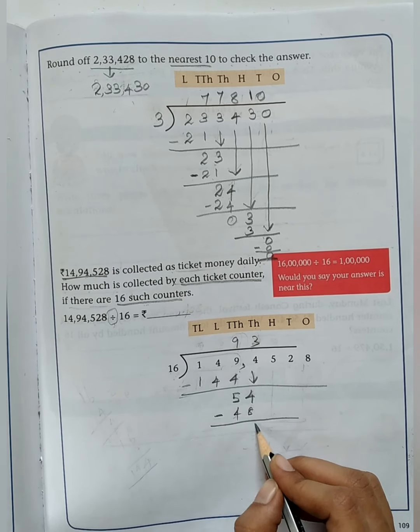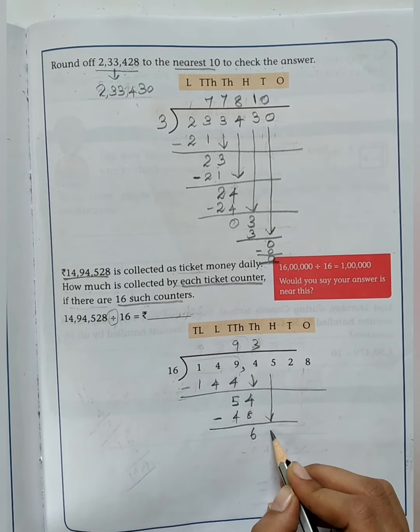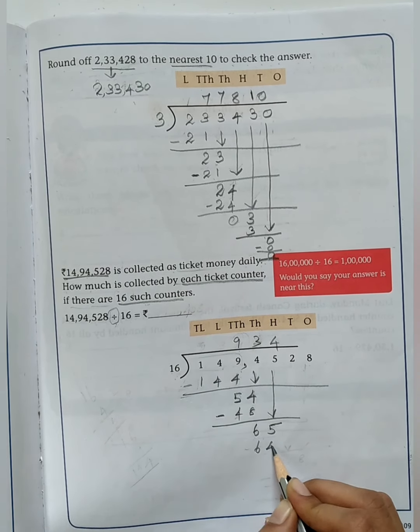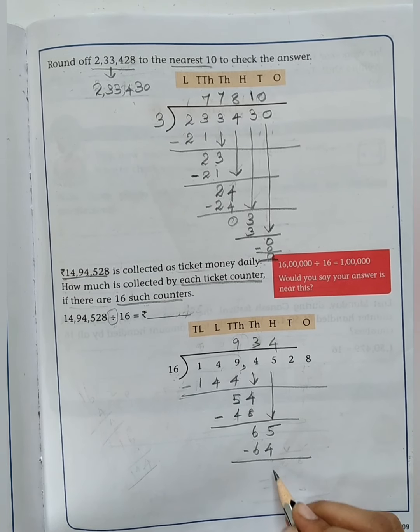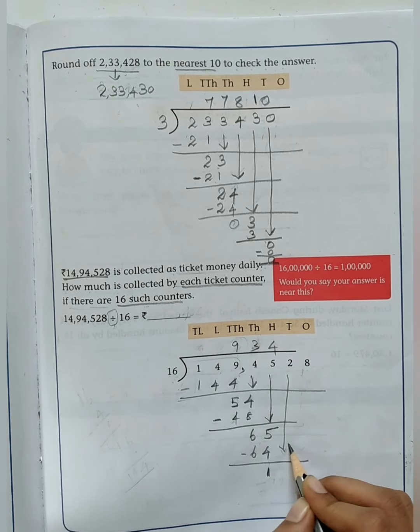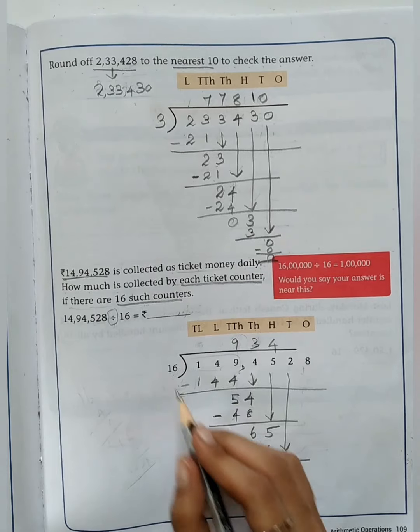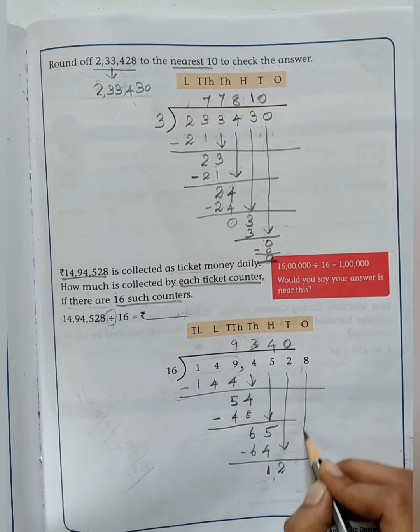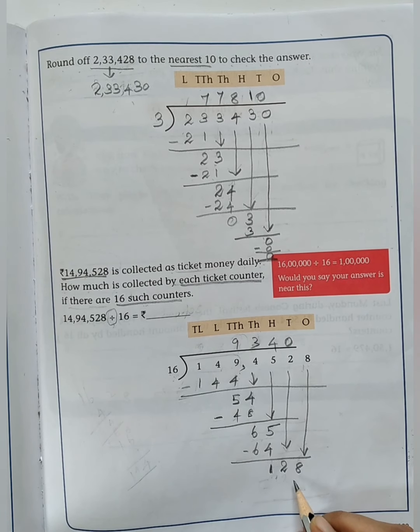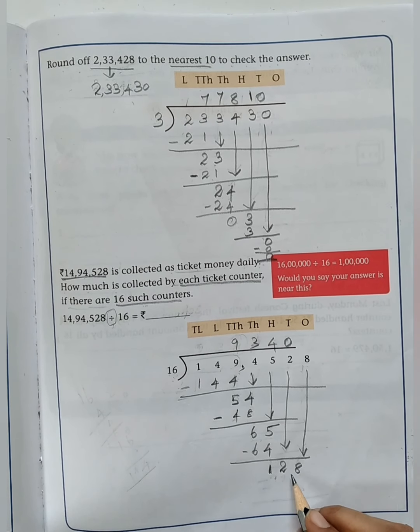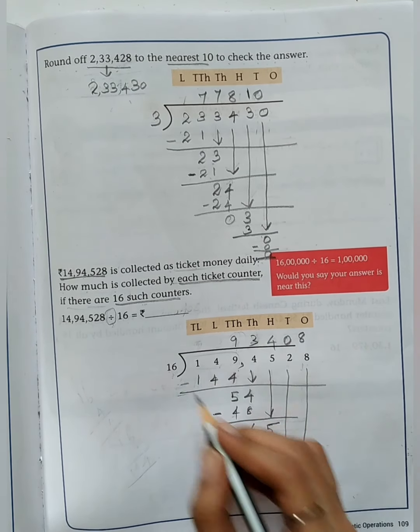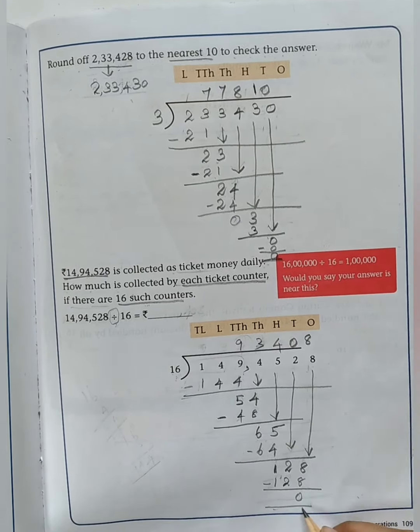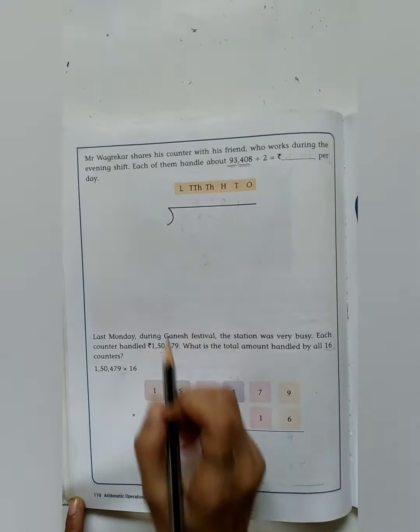After doing subtraction 5, then bring down 4. How many 16's are there in 54? 3 times 16 we got the answer as 48. After subtraction you will get 6. Bring down the next digit. 4 times 16 is 64. 65 minus 64 is 1. Bring down 12, it is less than 16, so put 0 in the quotient place. Bring down 8. 8 16's are 128. 128 minus 128 is 0. Now just move on to the next page.